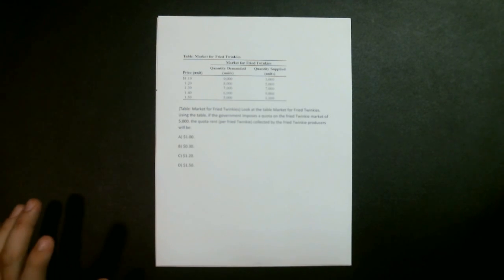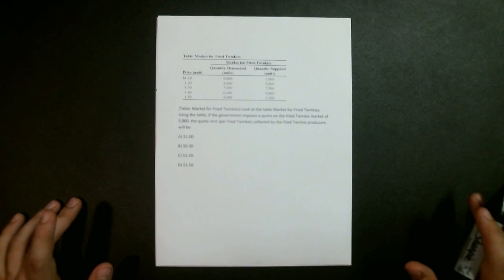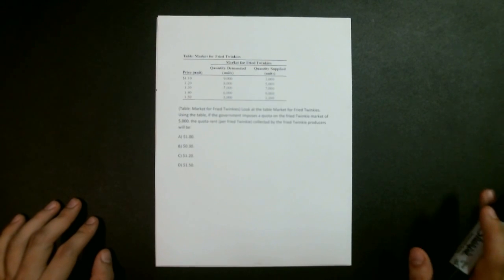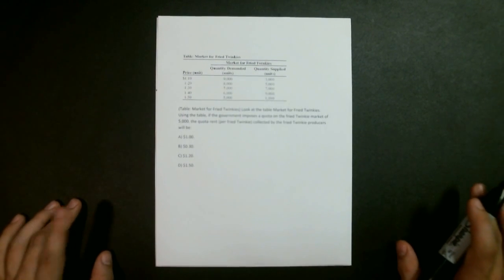This question says, look at the table, the market for fried Twinkies. Using the table, if the government imposes a quota on the fried Twinkie market of 5,000, the quota rent per fried Twinkie collected by the fried Twinkie producers will be